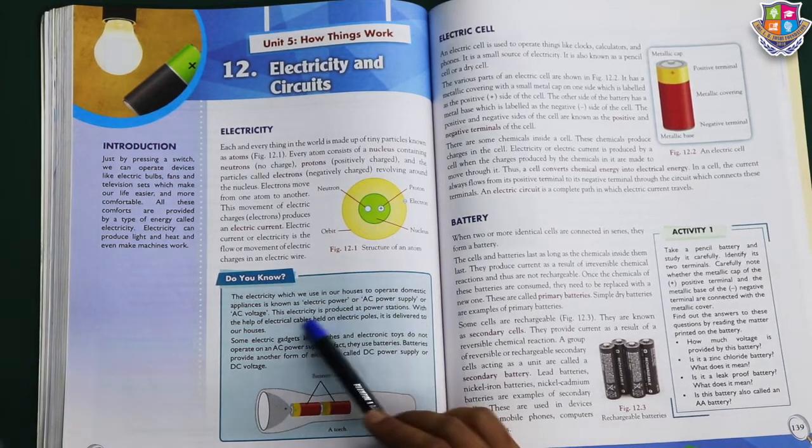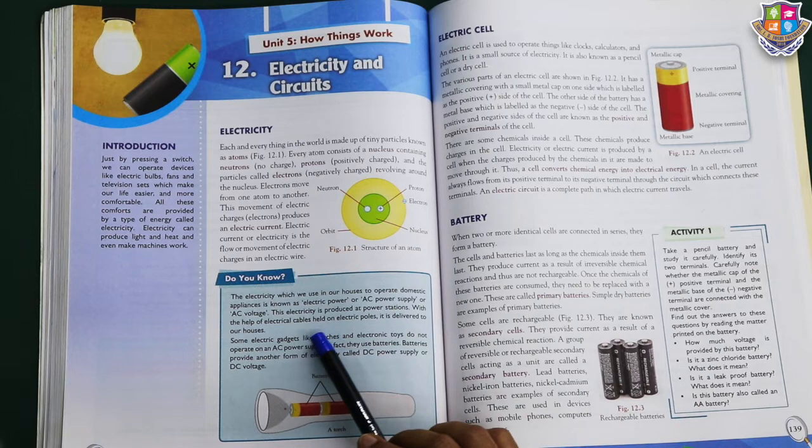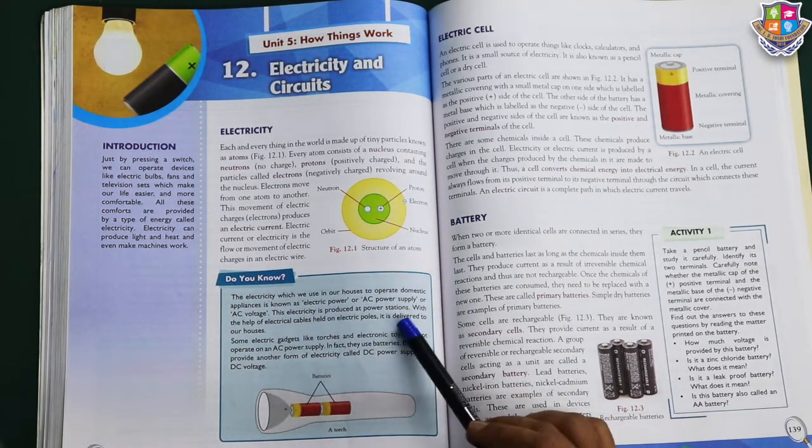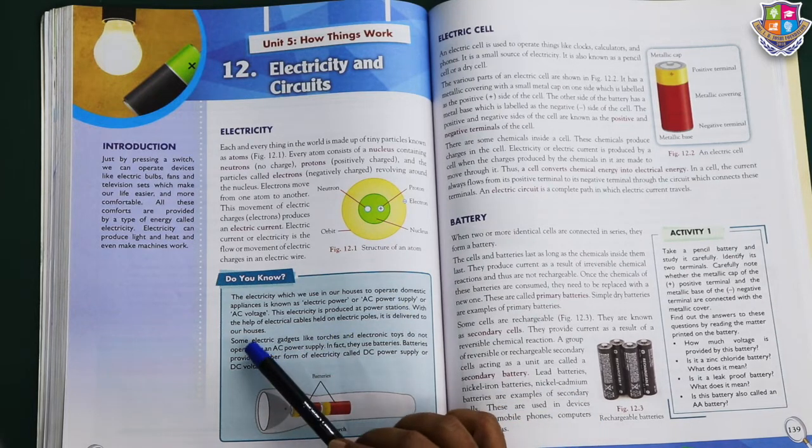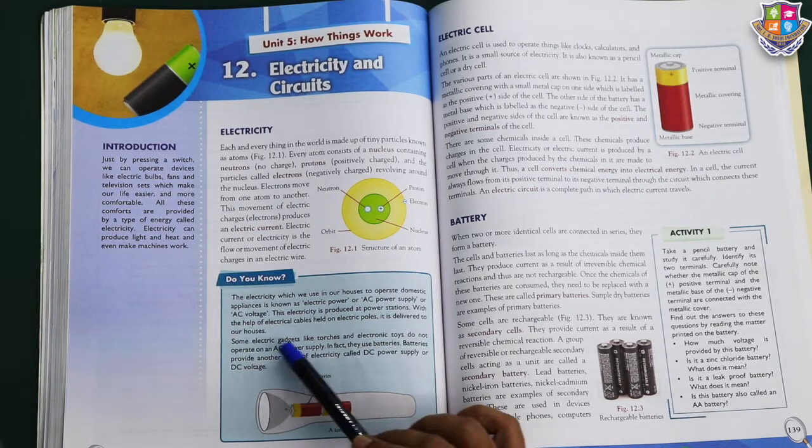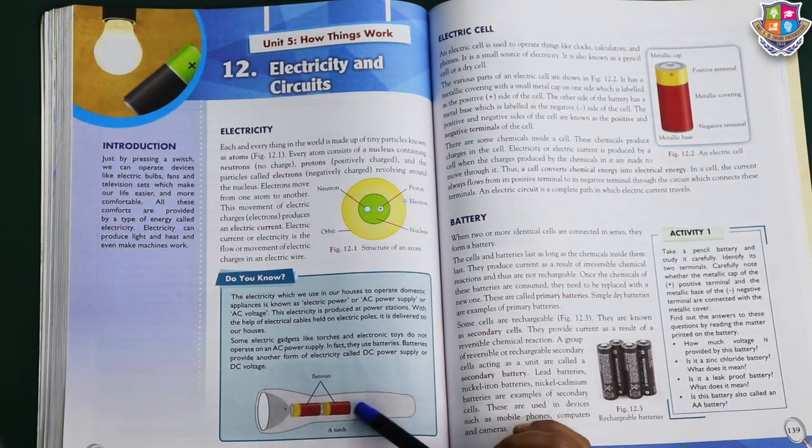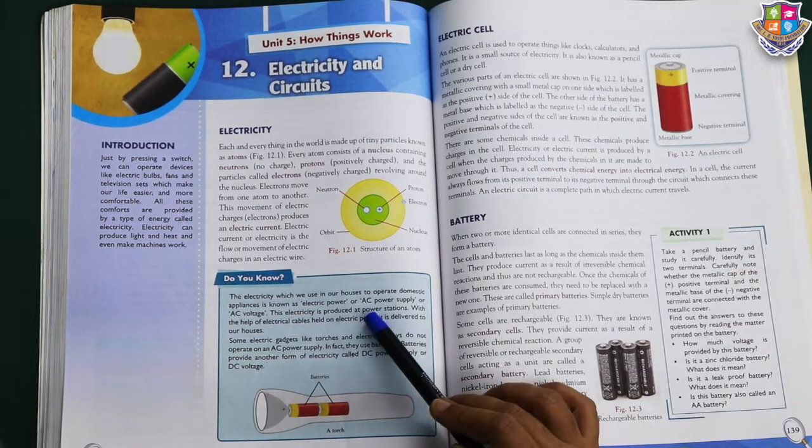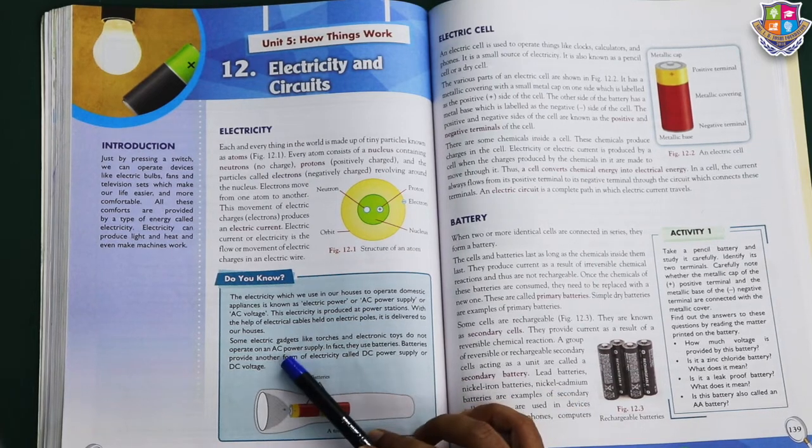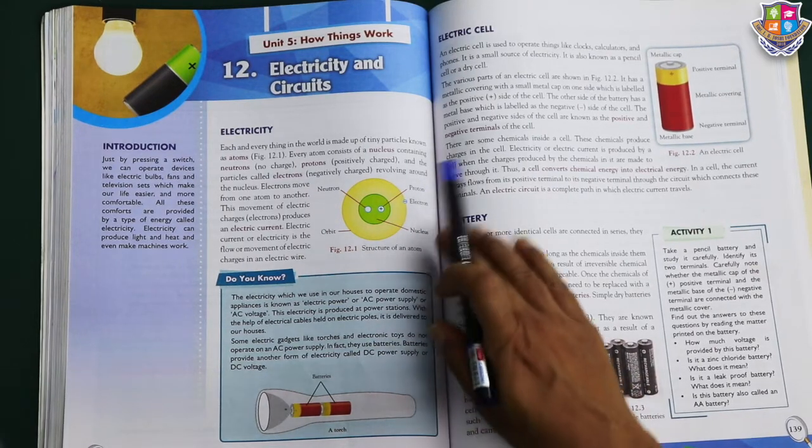AC supply. This electricity is produced at power stations. With the help of electric cables held in electric poles, it is delivered to our house. Transformers are there. AC current, direct current. AC is for alternate current, DC is for direct current. Some electric devices like torch and electronic toys do not operate on AC power. This is direct current. You put your battery, it is straight current. But in our house, alternate current is there, so all the gadgets will work. AC current is the alternate current. Transformer provides as much power as you need.